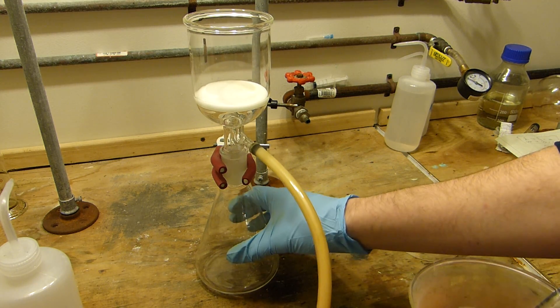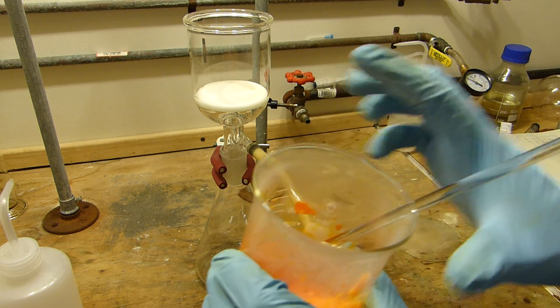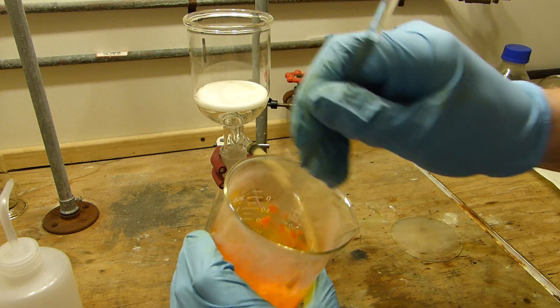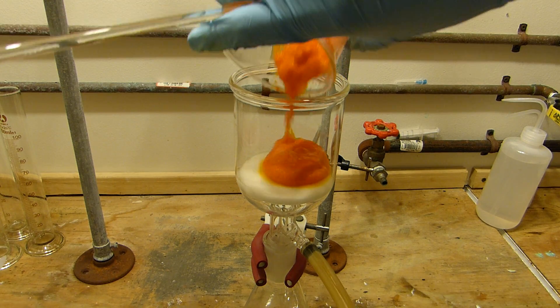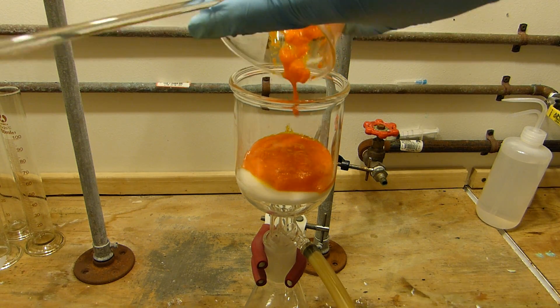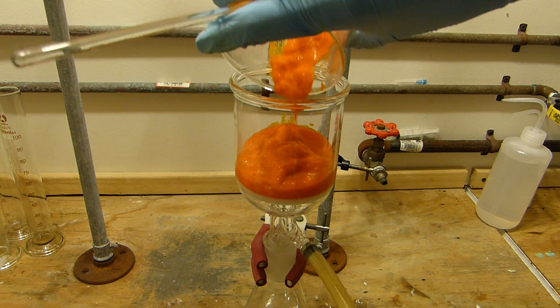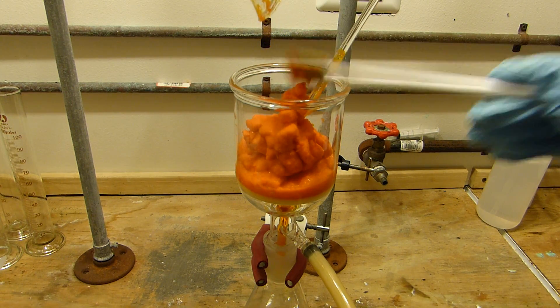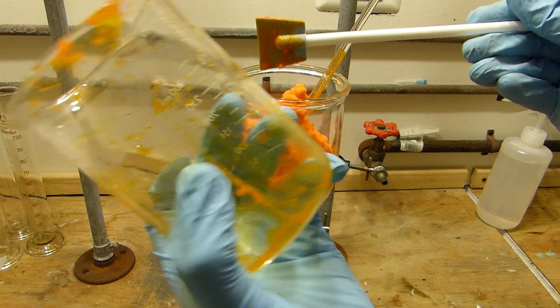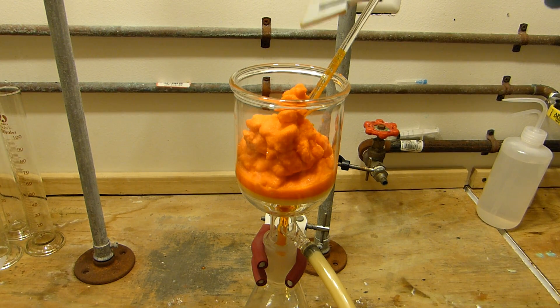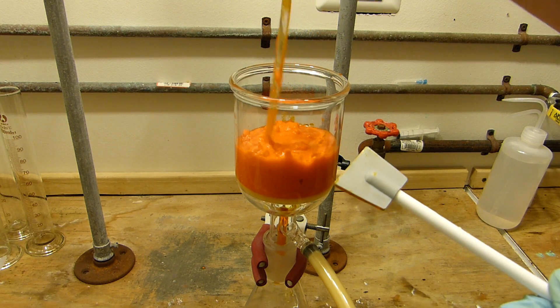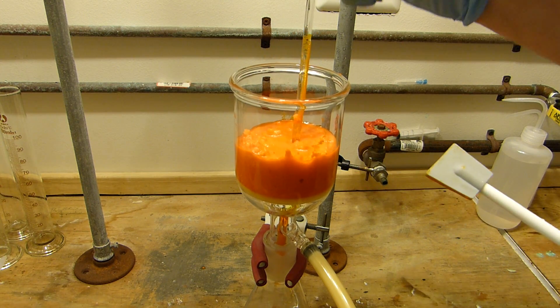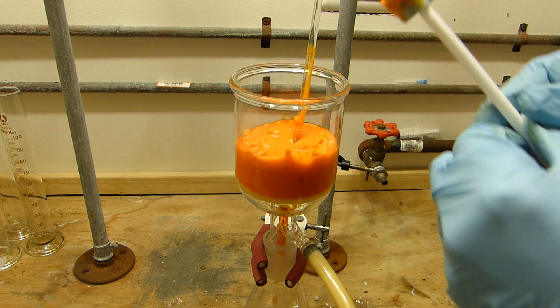As you can see I've set up for vacuum filtration and we'll just quickly pull the supernatant liquid off of this precipitate. All right that's about as good as I'm going to get the beaker. So I'll push this down to settle it out and we'll start the vacuum and suck the liquid out of this. Solution is already dripping through.